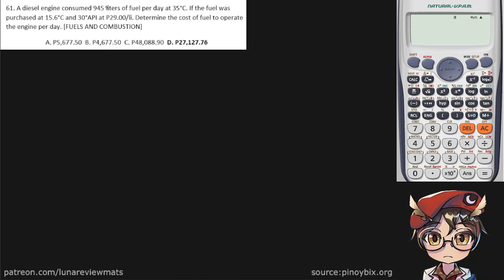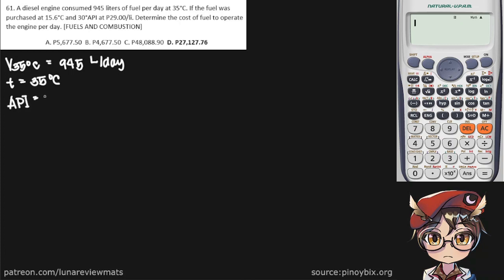A diesel engine consumed 945 litres of fuel per day at 35°C. That is our volume at 35°C. The temperature given is 35°C, but the fuel was purchased at 15.6°C — that's the standard reference temperature — and at 30° API. The cost of fuel is 29 pesos per litre. We need to determine the cost of fuel to operate the engine per day.